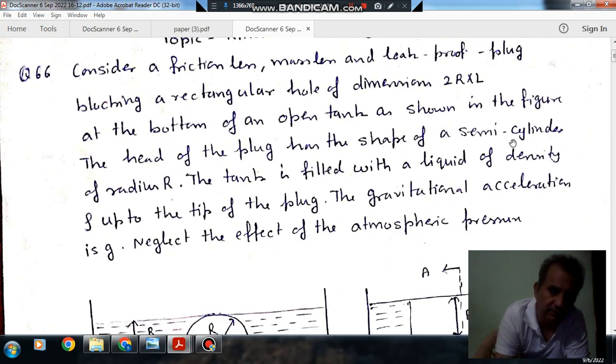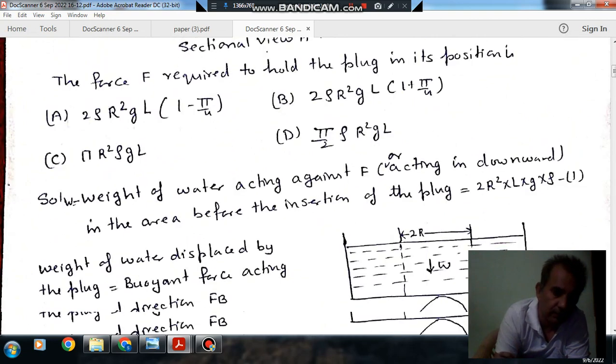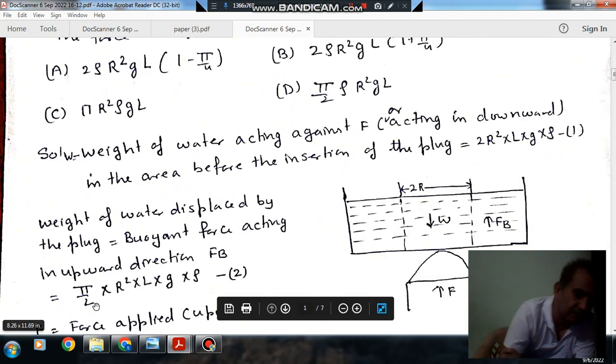As the plug is of semi-cylindrical shape, the volume of that is πR²L, and for semi-cylindrical it's (π/2)R²L. That is the volume of the water displaced.